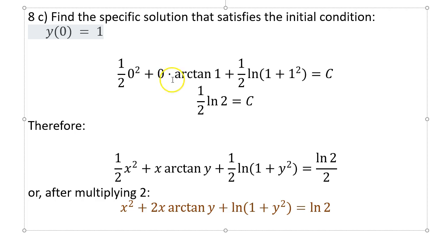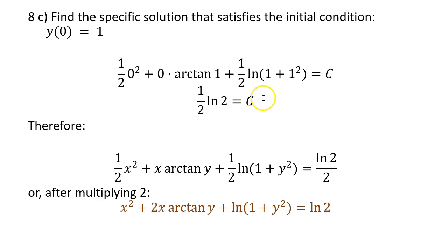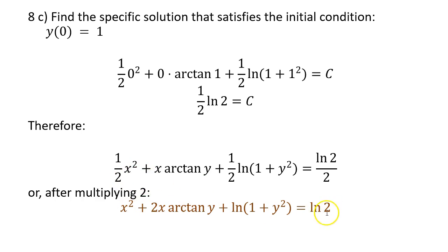y(0) = 1 means when x = 0, y = 1. Replace all x's with 0 and y with 1. Doing this gives c = ½ ln 2. Substituting back gives the particular solution. If you want to simplify, multiply through by 2 to eliminate fractions — that cleaner form is probably the better final answer.